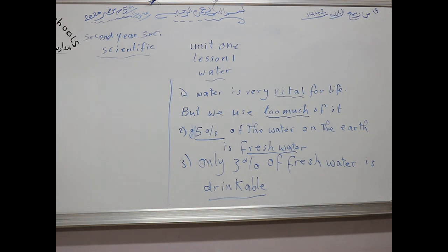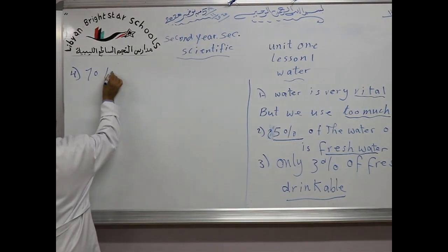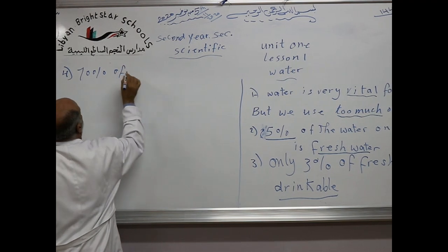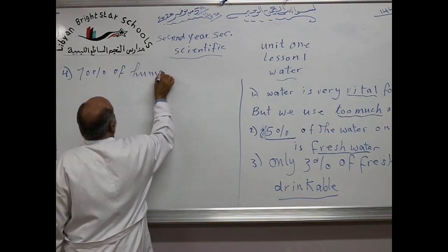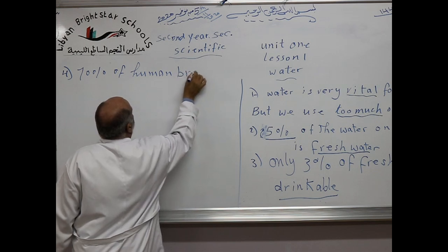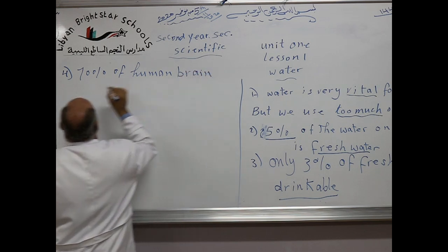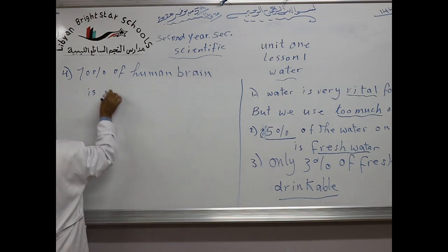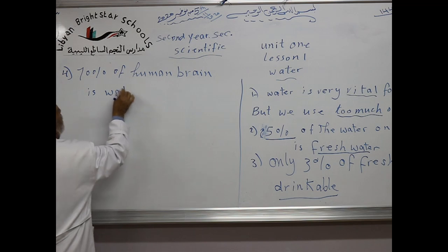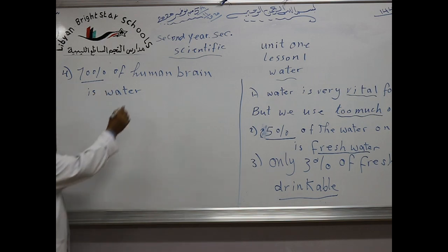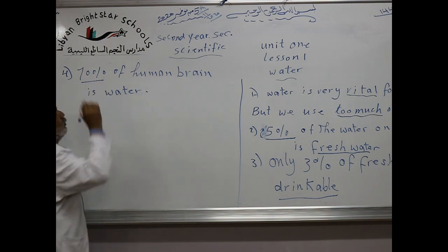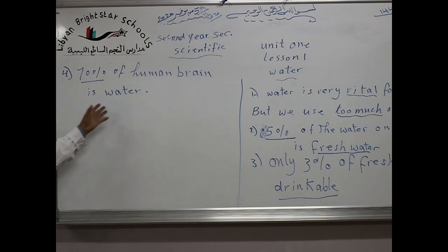Number four: 70% of the human brain is water. 70% of the human brain is water.